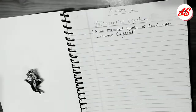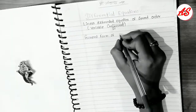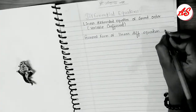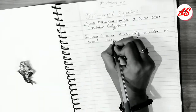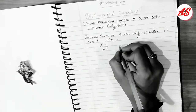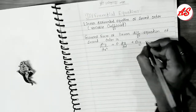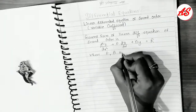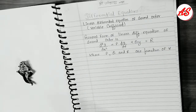The general form of a linear differential equation of a second order is d²y/dx² + P(dy/dx) + Q·y = R, where P, Q, and R are functions of x.